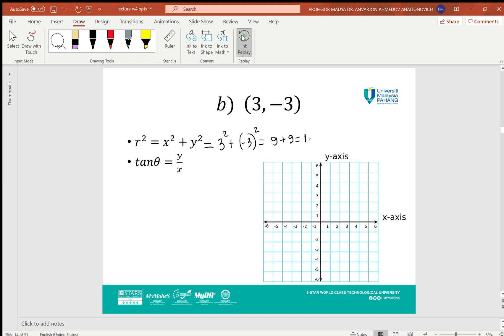For part b, (3, -3): r² = 9 + 9 = 18, so r = √18. tan θ = -3/3 = -1, so θ = -π/4. Looking at the xy-coordinate system, the point with x positive and y negative will be in the fourth quadrant, so that point is sketched here.